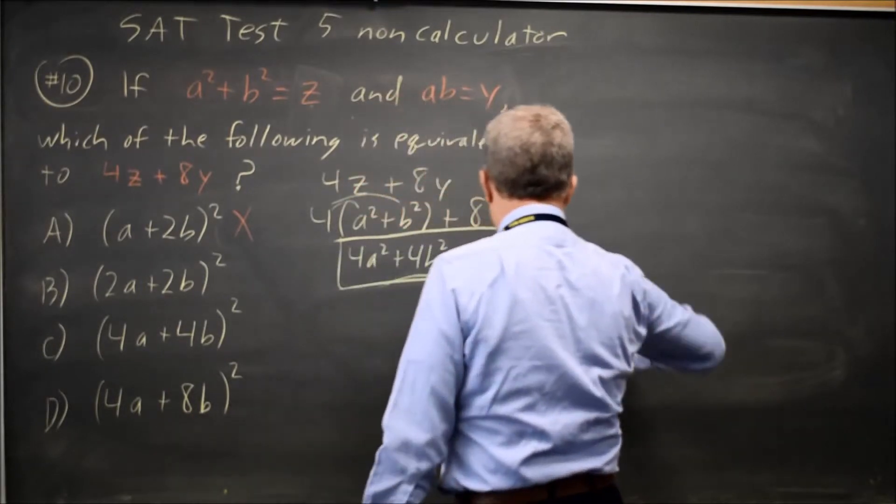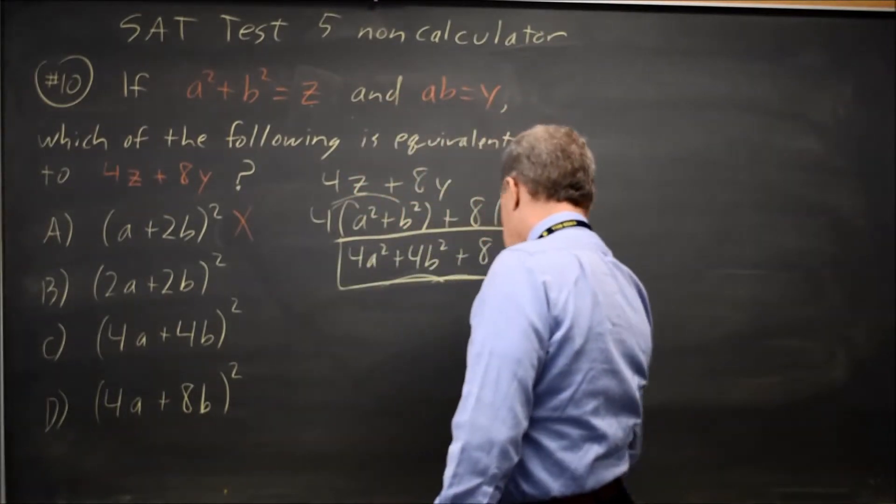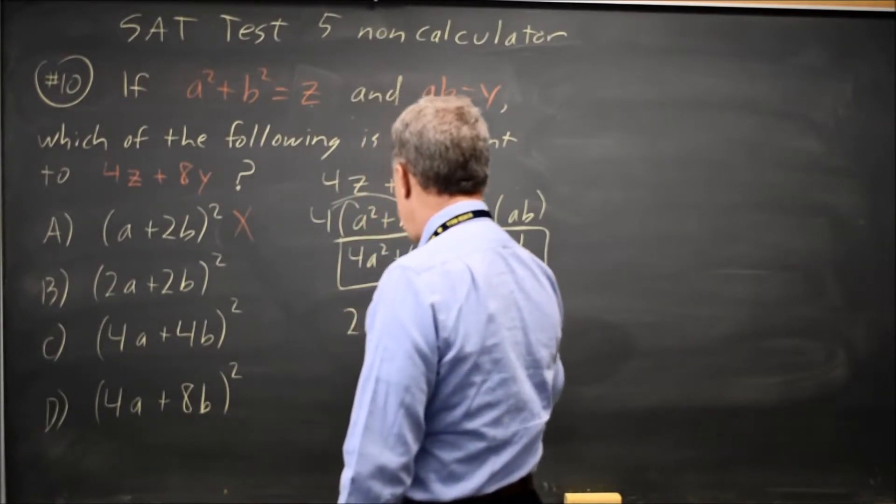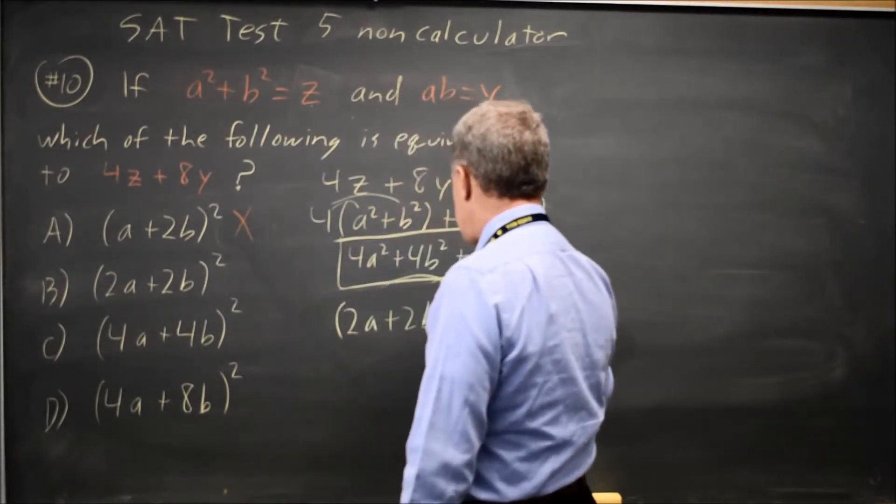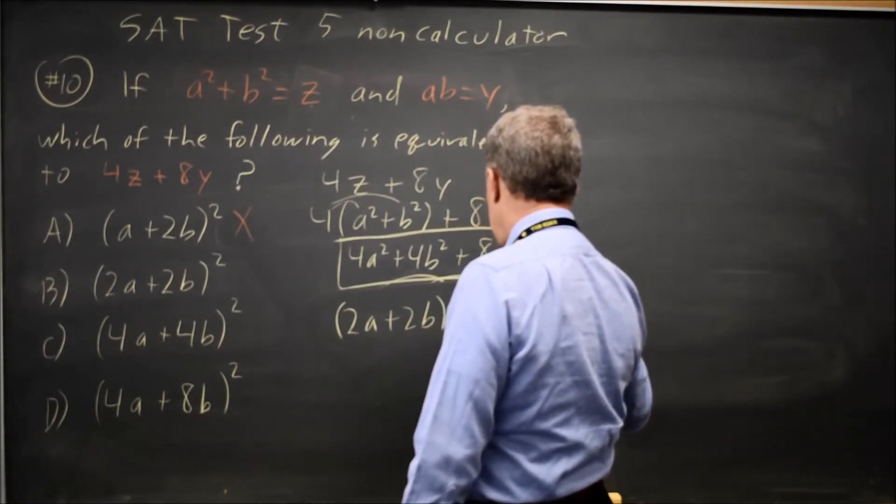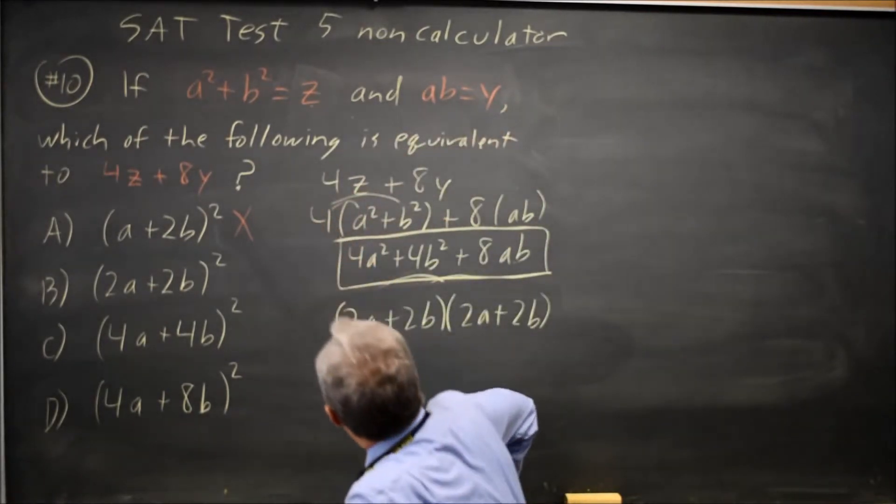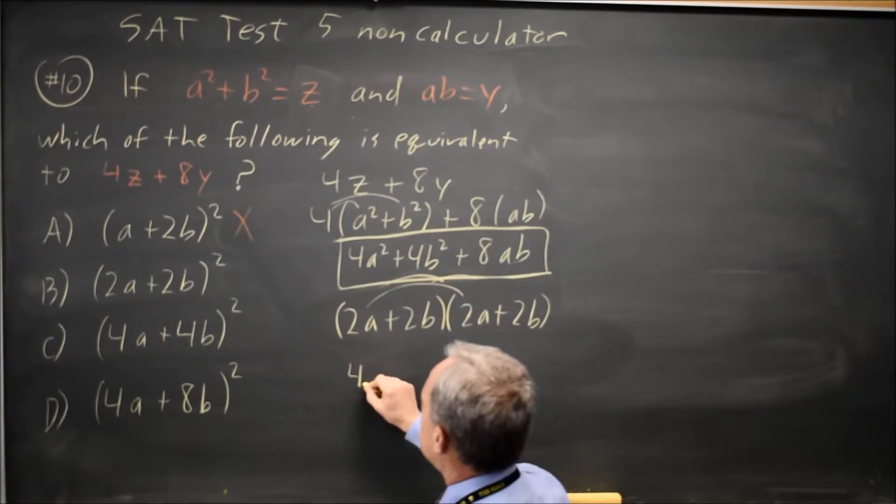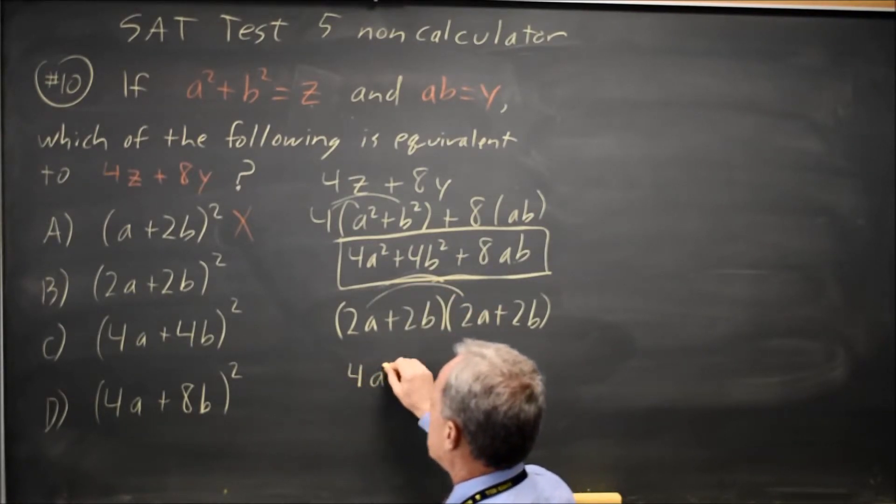Let's try the next choice. Choice b, again I'm going to use FOIL. 2a plus 2b times 2a plus 2b. FOIL, first times first gives me 2a times 2a is 2 times 2 is 4. a times a is a squared.